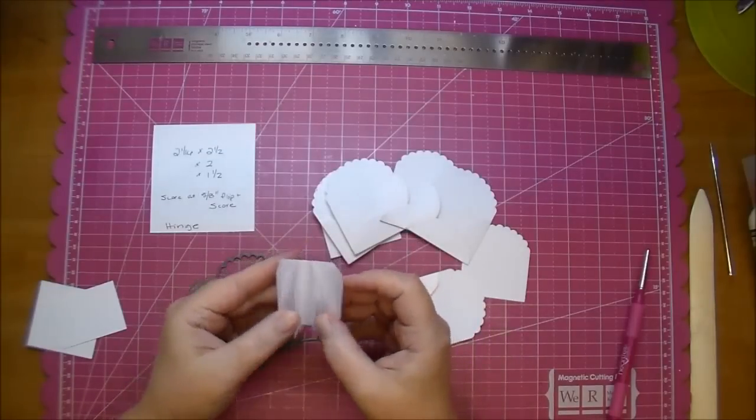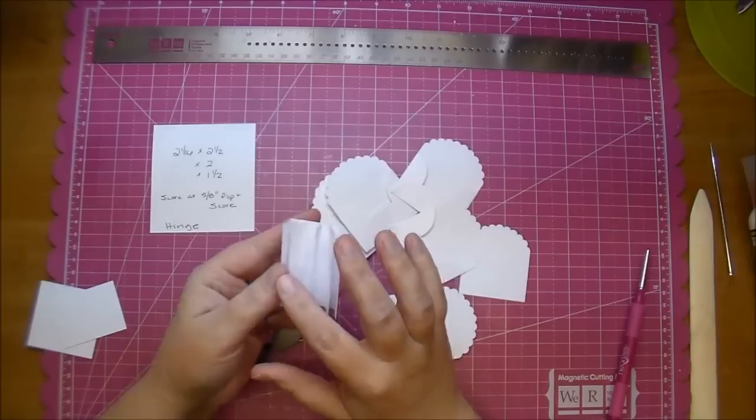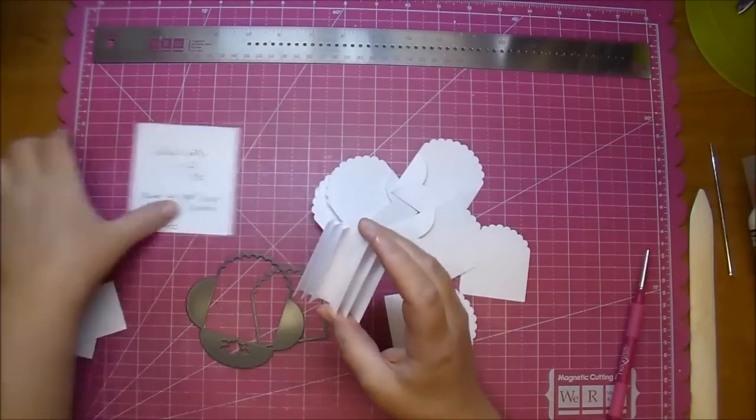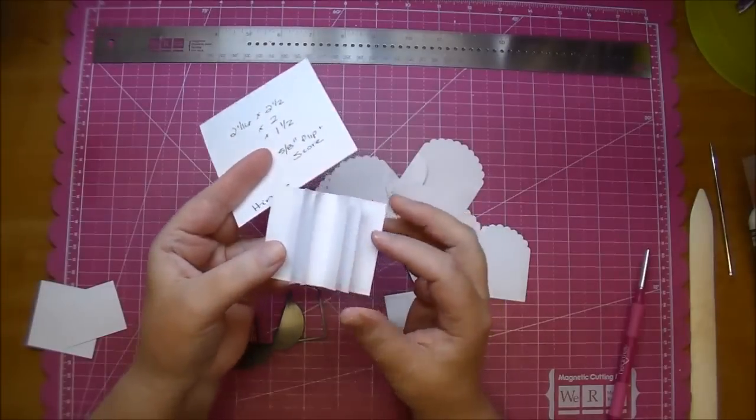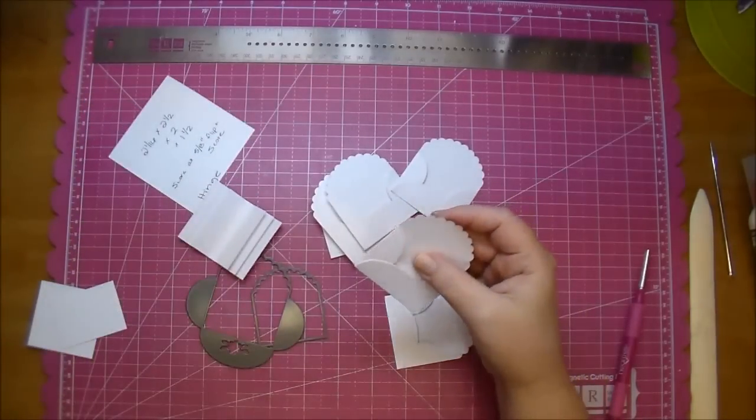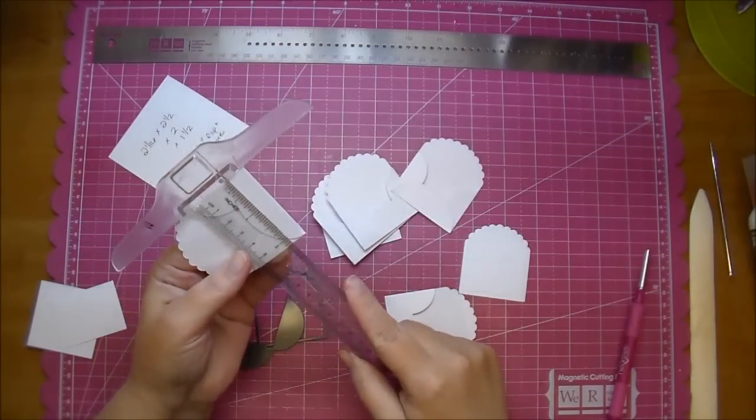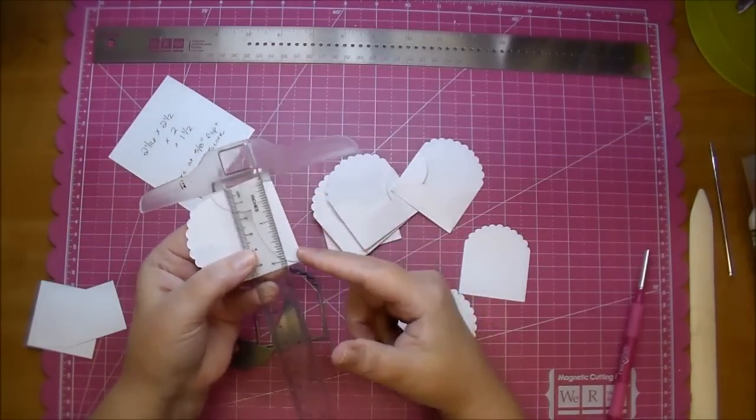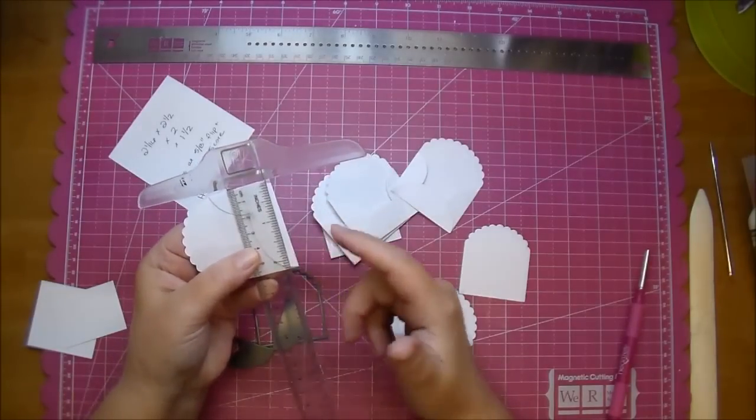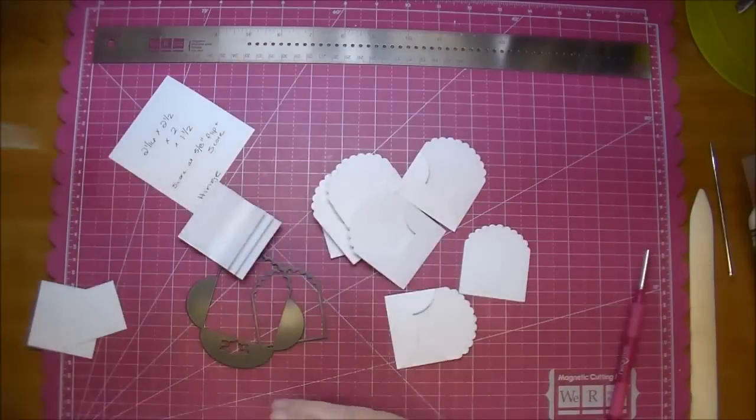For the hinge that I'm gluing each pocket to, I'm using the concept from Laura Denison Stack the Deck binding system. I cut three pieces of paper and have glued them together. How I got my measurements is I measured the height of my pocket which is close to two and a quarter, but you don't want it the same length as your pocket or the same height. So I did mine at two and one sixteenth. That way it's a little bit shorter than my pocket.